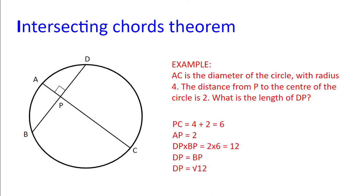Okay, so PC equals the radius plus the distance P to the center, which is 4 plus 2, which is 6. AP equals 2. So DP multiplied by BP equals 2 multiplied by 6, which is 12. And now we also know that the diameter bisects chord BD because angle APD is 90 degrees. And so we have DP equals BP. And so DP equals the square root of 12.